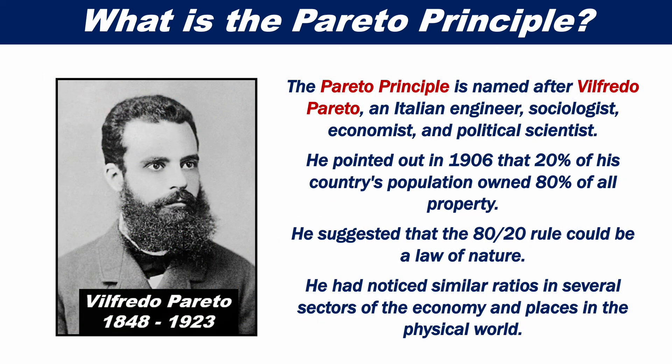The Pareto principle is named after Alfredo Pareto, an Italian engineer, sociologist, economist, and political scientist. He pointed out in 1906 that 20% of his country's population owned 80% of all property. He suggested that the 80-20 rule could be a law of nature, having noticed similar ratios in several sectors of the economy and places in the physical world.